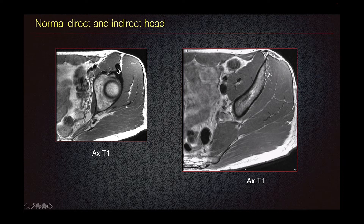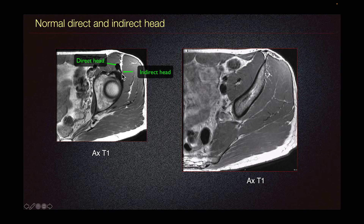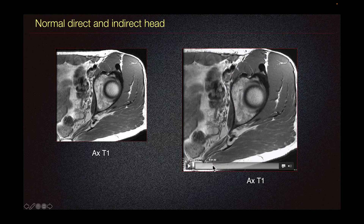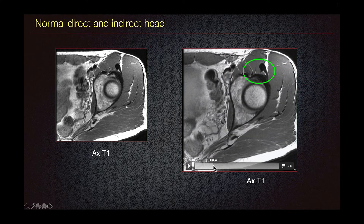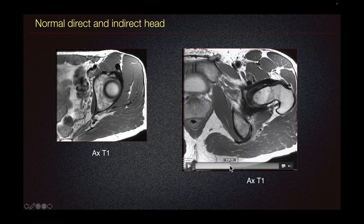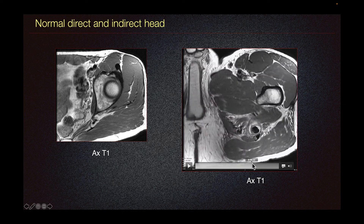A quick review of our anatomy here depicts a normal direct head, which attaches to its origin at the anterior inferior iliac spine. Just posterior to this, we can see the indirect head, which attaches at the superior acetabular ridge and posterior lateral aspect of the hip joint capsule. The two heads form a conjoined tendon about 2 cm distal to their origin, as we can see here.